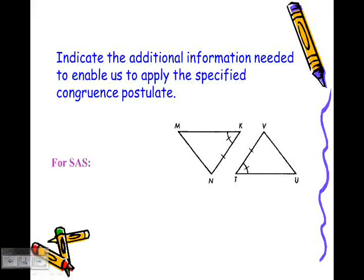Try this one right here by pausing the video and writing down what you believe you need to prove these triangles are congruent by SAS. We know that if we have a side and an angle, we need the other side to be congruent in order to prove SAS. So I need MK to be congruent to TU in order to show these are congruent by SAS.